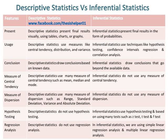Descriptive statistics draw conclusions based on known data, while inferential statistics draw conclusions that go beyond the available data. Descriptive statistics use measures of central tendency such as mean, median, and mode, while inferential statistics do not use any measure of central tendency.